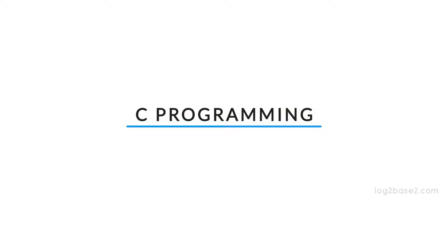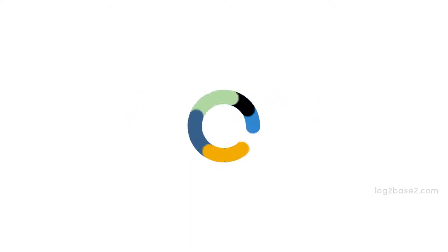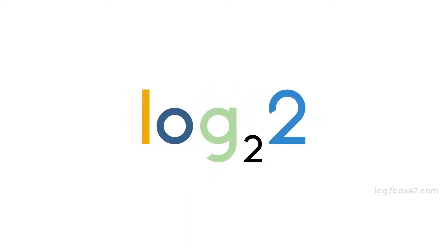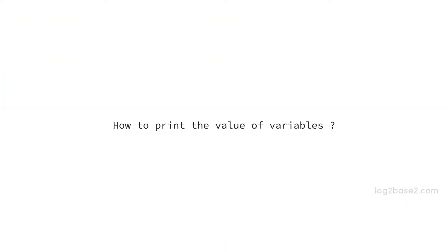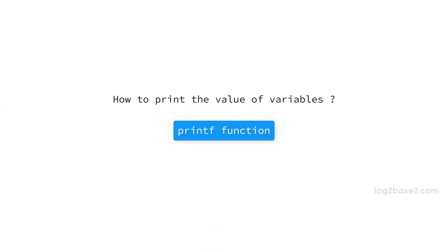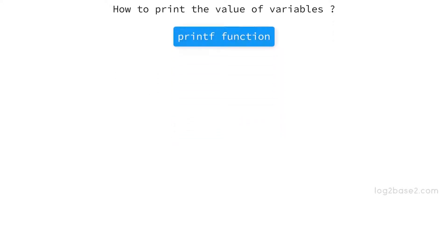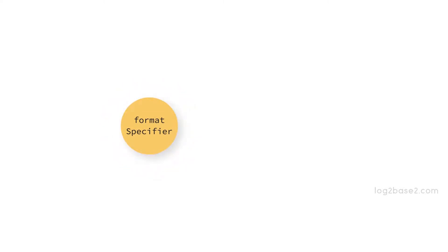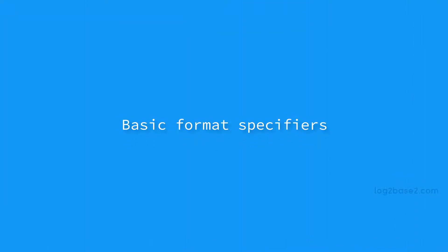Hi friends, in this video we are going to learn how to print the value of a variable. We can use the printf function to print the value of a variable, and to do that we need to specify two things in the printf function: one is the format of the variable — we need to specify the corresponding format specifier — and next is the name of the variable which we want to print. Now let us see some basic format specifiers.